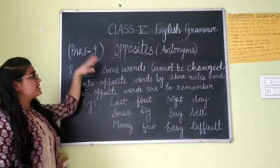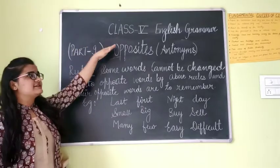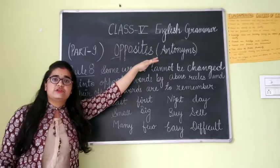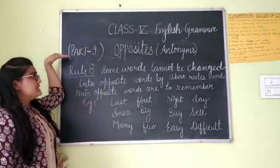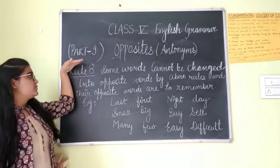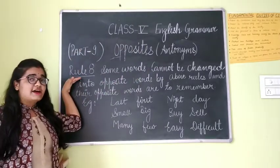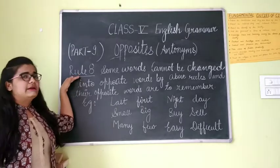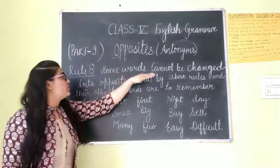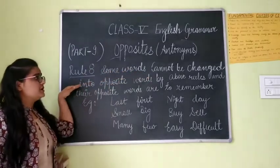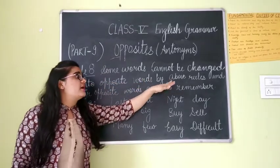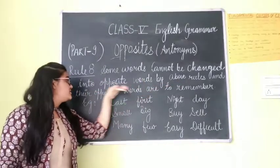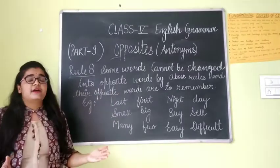Hello students. Today's class is the last part of English grammar — specifically part 9. Rule number 8 says some words cannot be changed into opposite words by the above rules, and the opposite words are to be remembered.